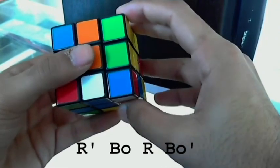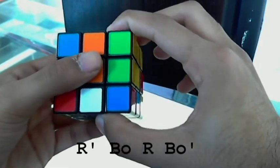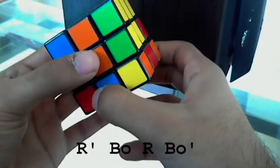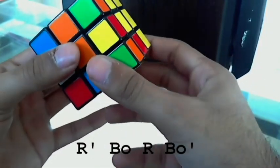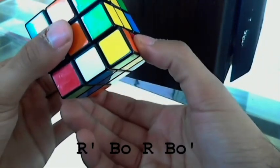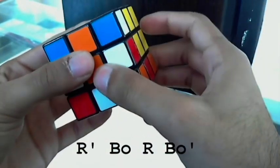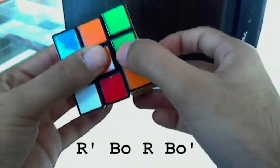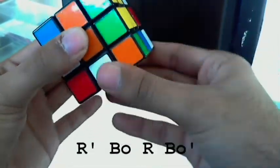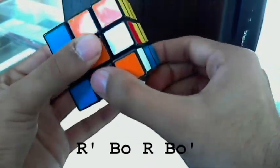Right face clockwise. Anticlockwise. Right face anticlockwise, bottom face clockwise, right face clockwise, bottom face anticlockwise. I'll do it again. Right face anticlockwise, bottom face clockwise, right face clockwise, bottom face anticlockwise. And keep doing that until the cube eventually puts itself in its own slot.